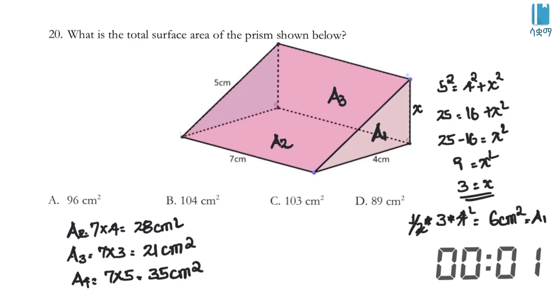Now we need to calculate the total surface area by adding all the face areas together: area 1 plus area 2 plus area 3 plus area 4 plus area 5.